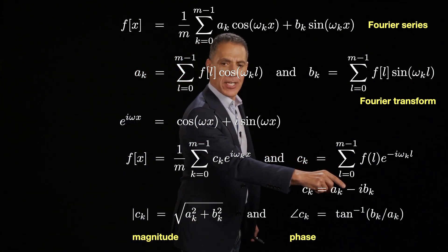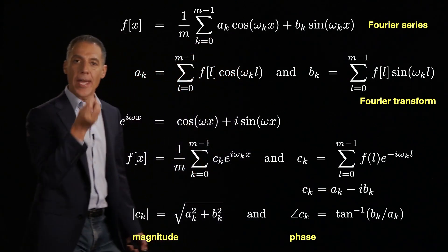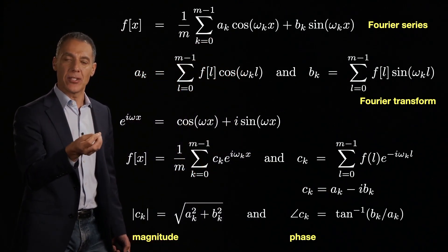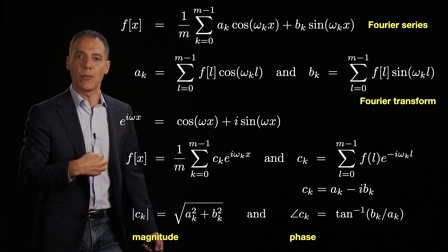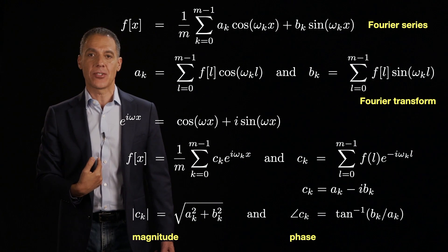We've bundled everything up into a single basis representation in terms of the complex exponential. Now, this thing right here, c_k, which are the weights associated with the basis, and that's, of course, what's interesting to us.